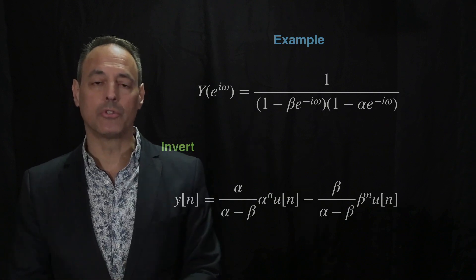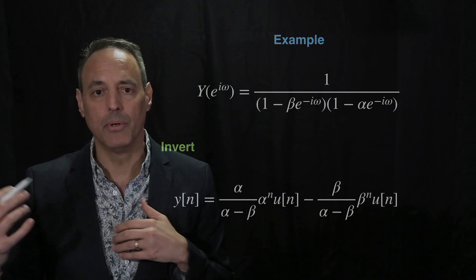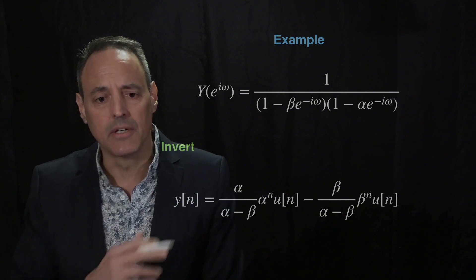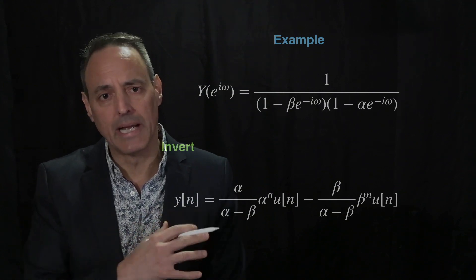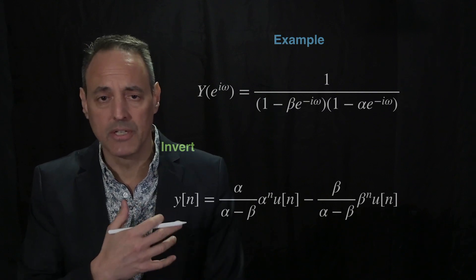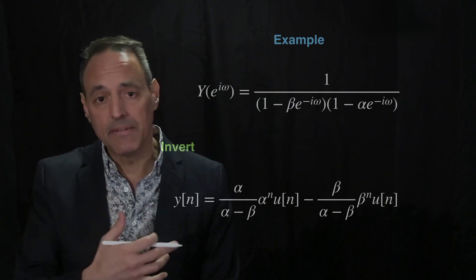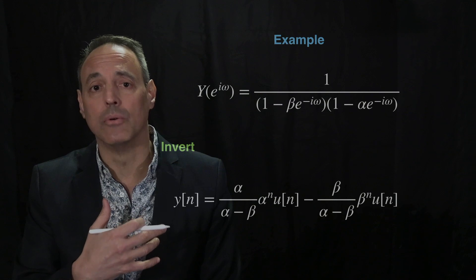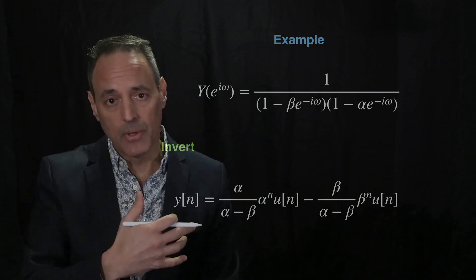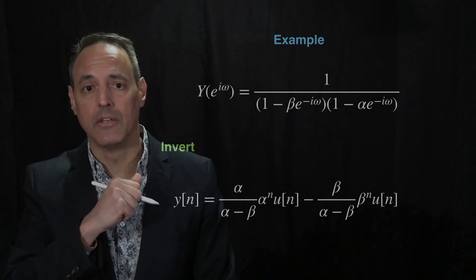That's your solution to the LTI system, obtained simply by Fourier transforming the input, Fourier transforming the impulse response, multiplying, and inverting. Here we were able to do this completely by hand. As long as the functions are simple enough, the Fourier transform tables allow a lot of flexibility for finding analytic solutions. For more difficult cases, you can easily perform this computationally.